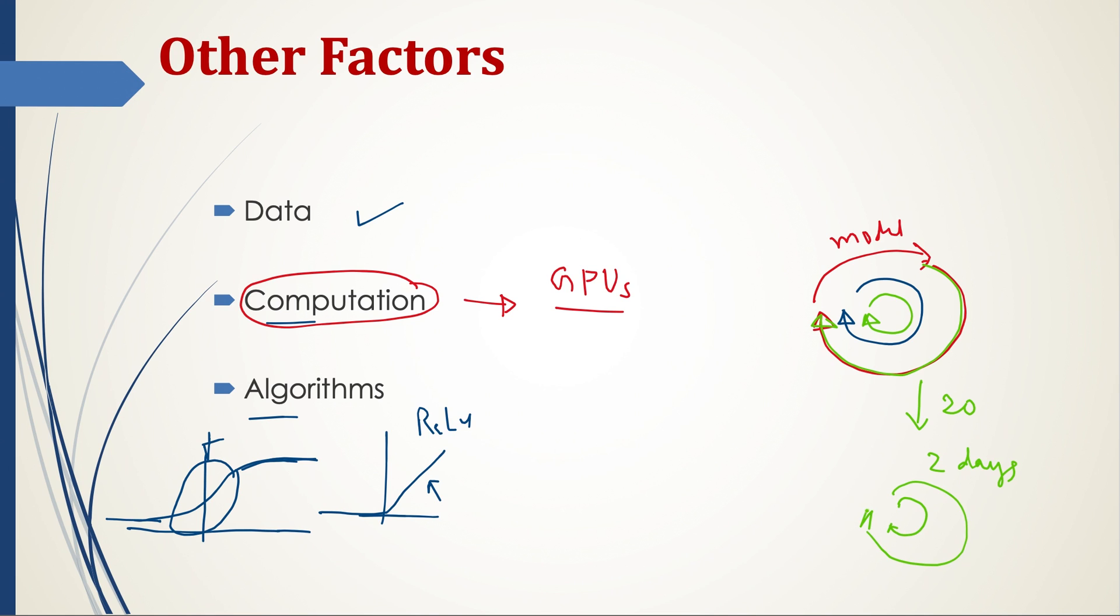And those experiments are required in order to reach a stable model or good model for your requirement. We saw that data, computation power, as well as algorithms all play a crucial role in the popularity of neural networks and deep learning in recent years.